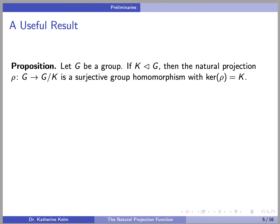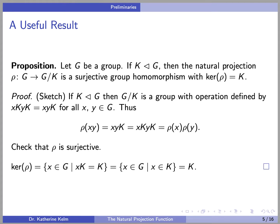A useful proposition is that if K is a normal subgroup of G, then the natural projection function is a surjective group homomorphism whose kernel is K. Proof: If K is normal in G, then G mod K is a group, with operation defined by XK · YK = XYK for all X and Y in G. And therefore, rho of XY equals XYK, which equals XKYK, which equals rho of X times rho of Y.